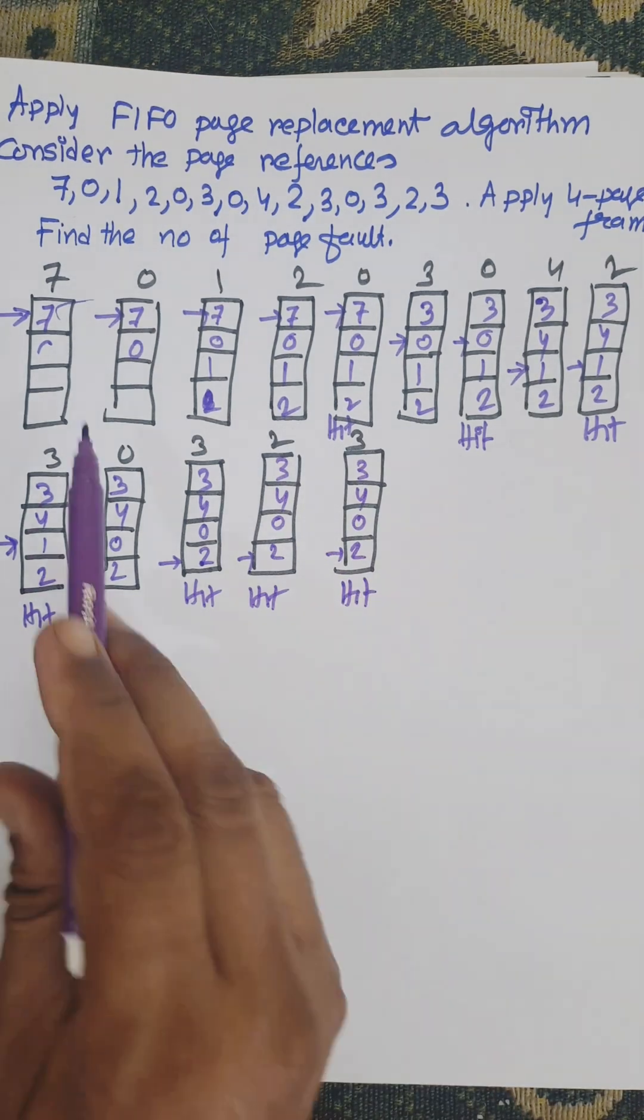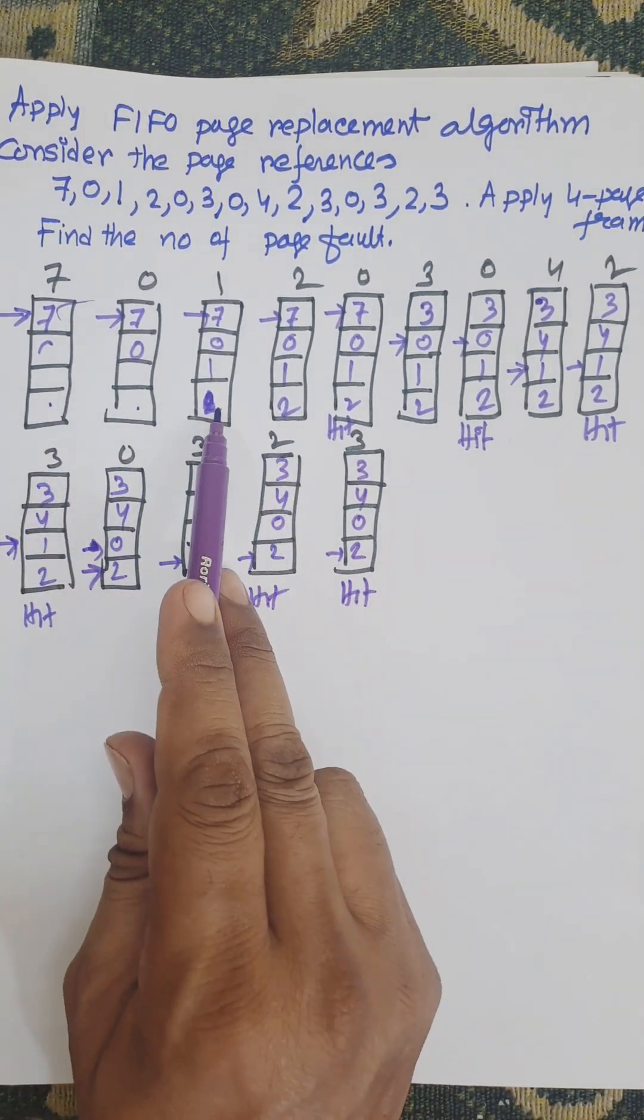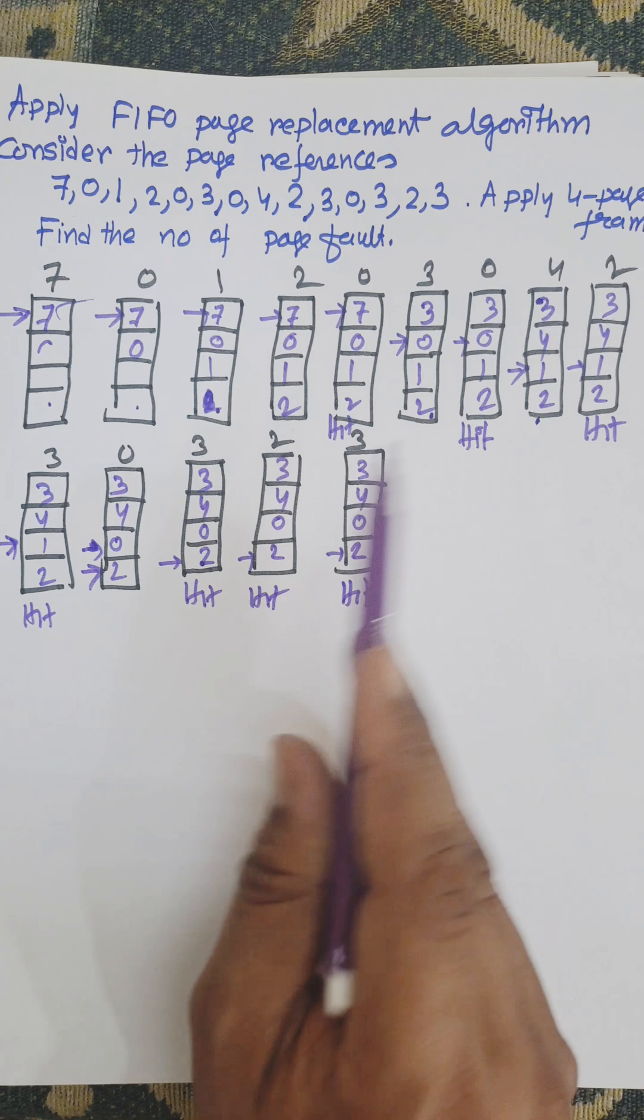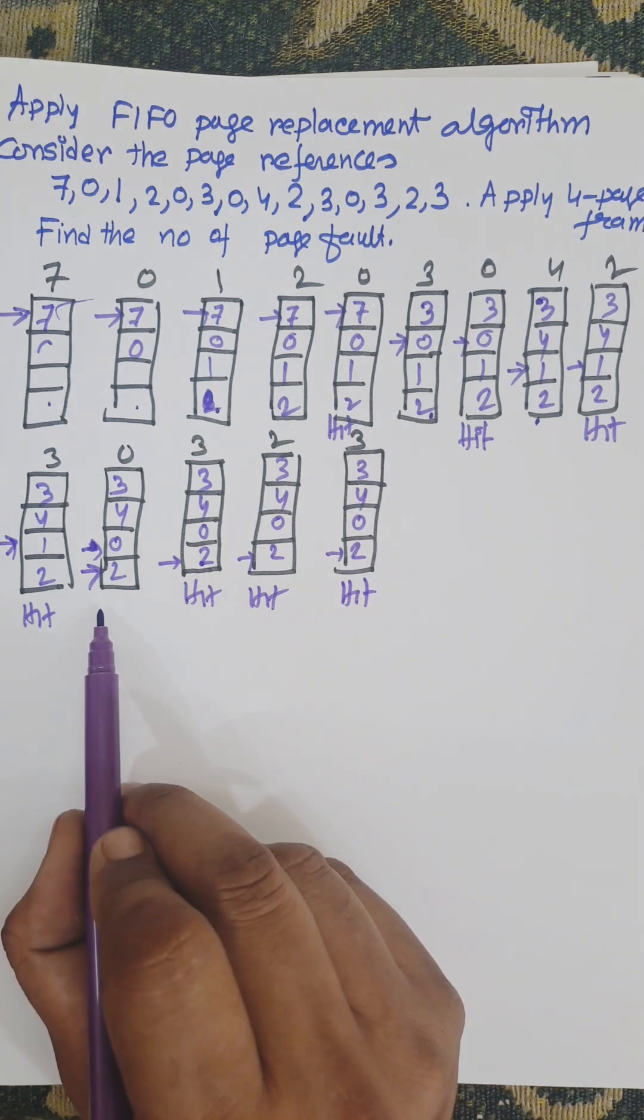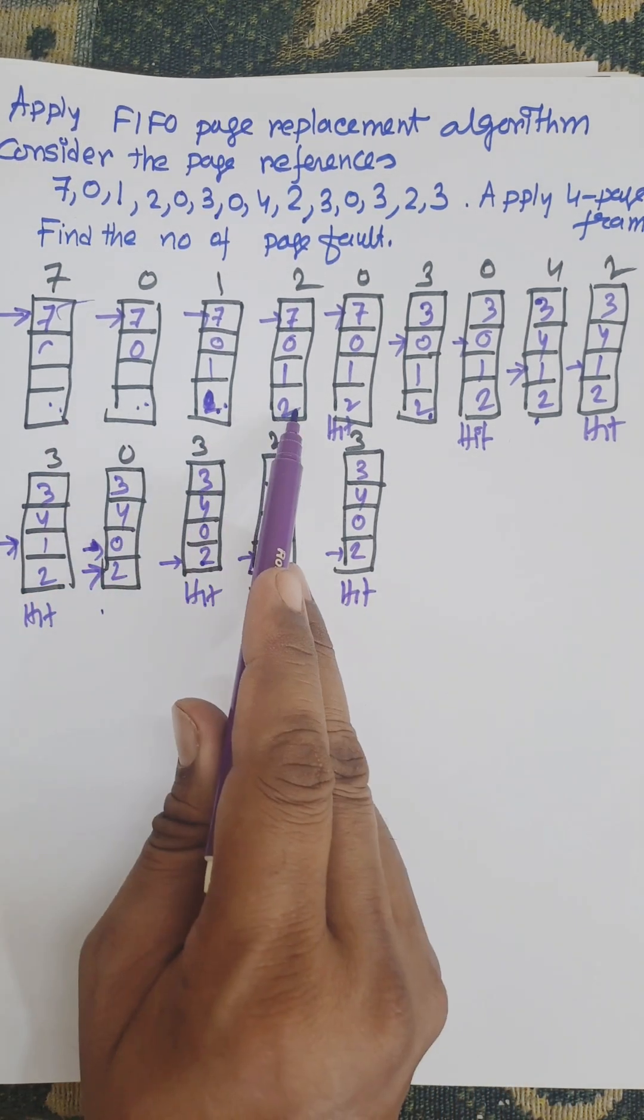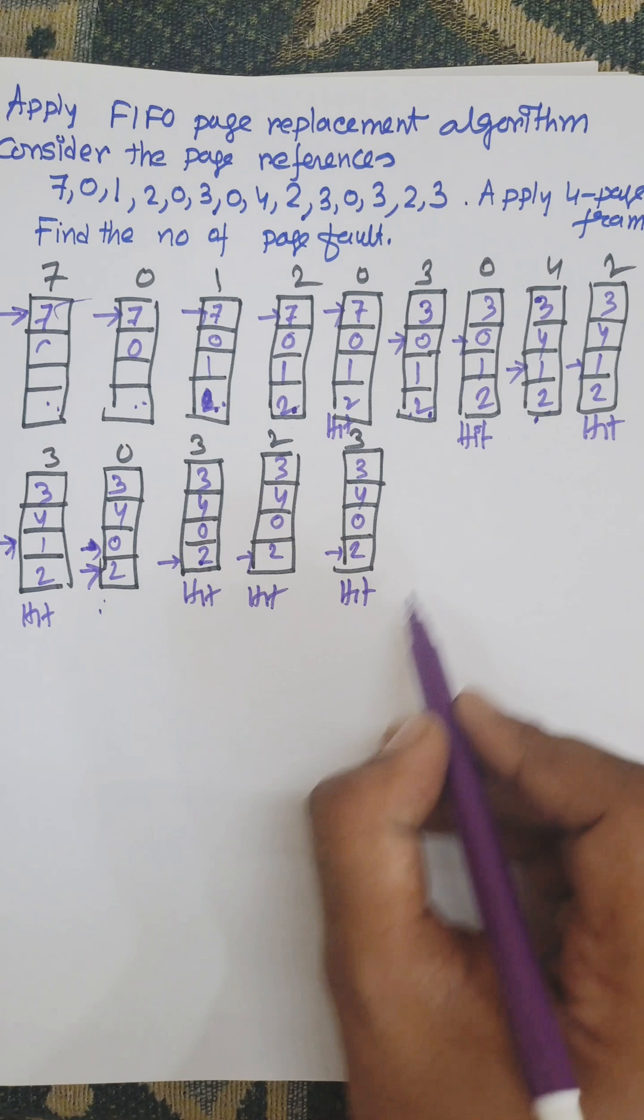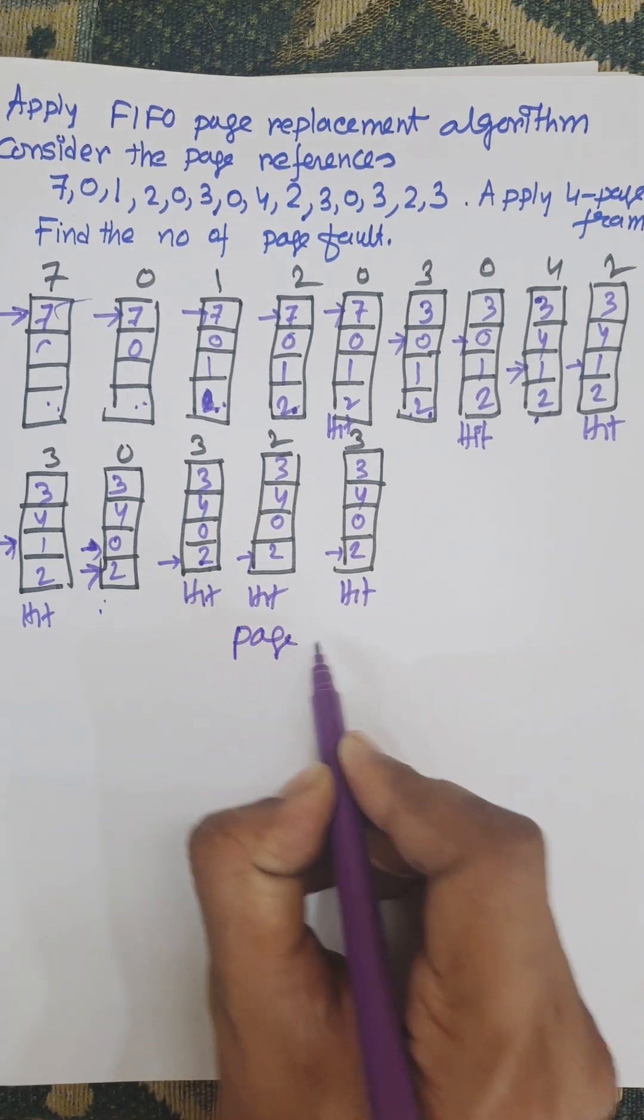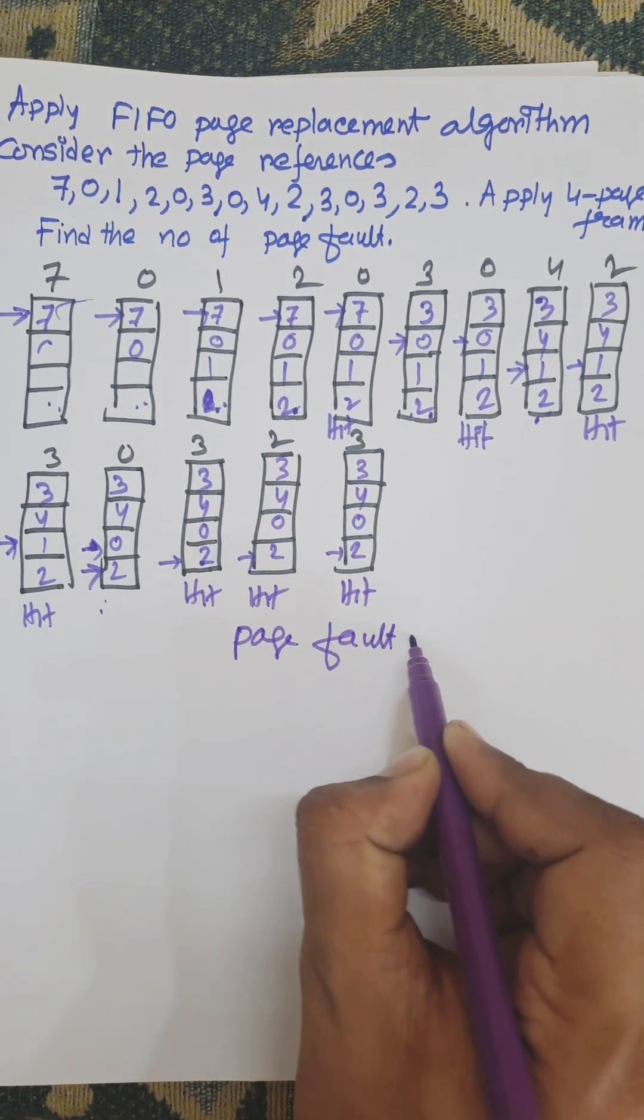So number of page faults: 1, 2, 3, 4, 5, and 6. 1, 2, 3, 4, 5, 6, 7. So page fault equal to 7. Page fault equal to 7.